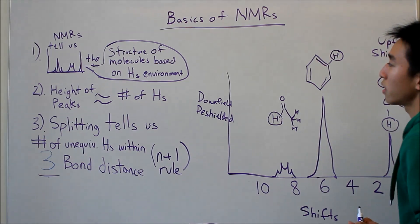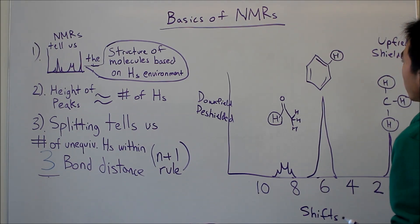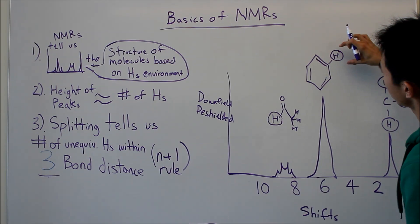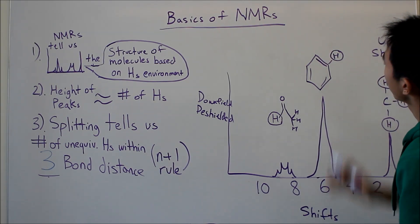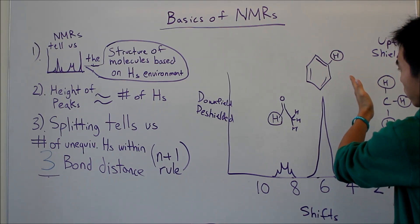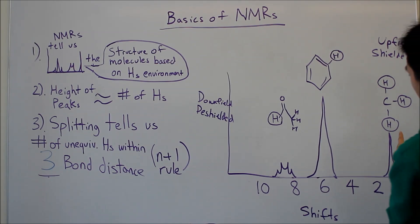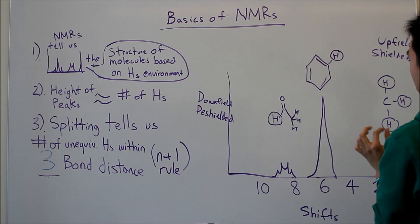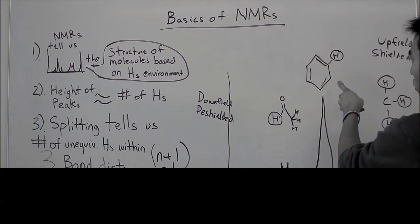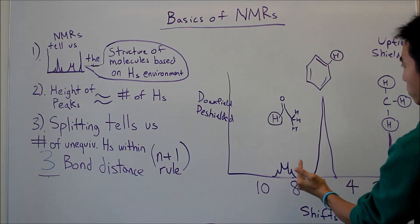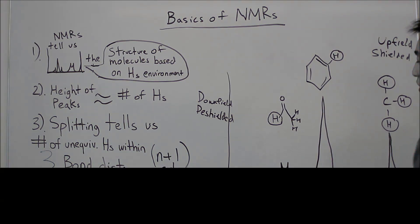And then benzene rings. The benzene rings also withdraw electrons to the center, so the electron field is going to be more pushed away, and then that's why this hydrogen is more deshielded than these hydrogens, but the electrons are being withdrawn more weaker than this one here. That's why it's more upfield than this guy.